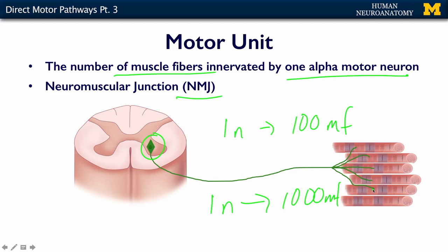The neuromuscular junction is a very special connection between the motor neuron in the ventral horn and the muscle fibers out in your peripheral muscles. Muscles need neurons — if there's damage within a nerve or the spinal cord, that muscle will atrophy if it's not innervated. And neurons need muscles too, because muscles make growth factors and other substances that influence the health and well-being of the alpha motor neuron. So it's a mutually beneficial relationship between the neuron and the muscle fibers.